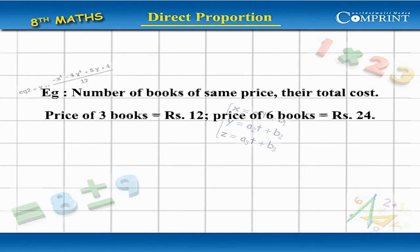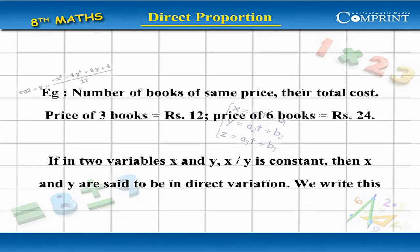Price of 6 books equal to Rs 24. If in two variables x and y, x by y is constant, then x and y are said to be in direct variation.